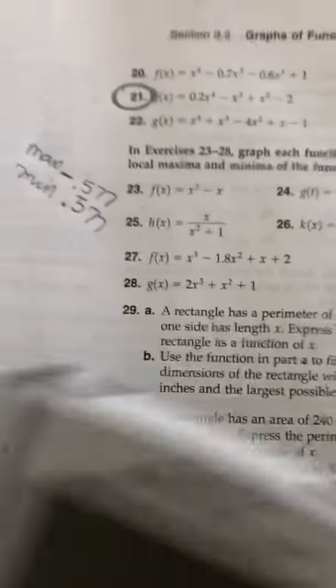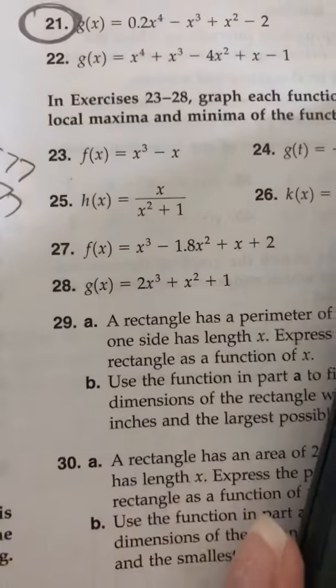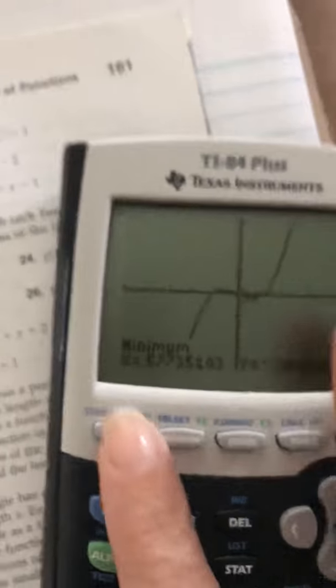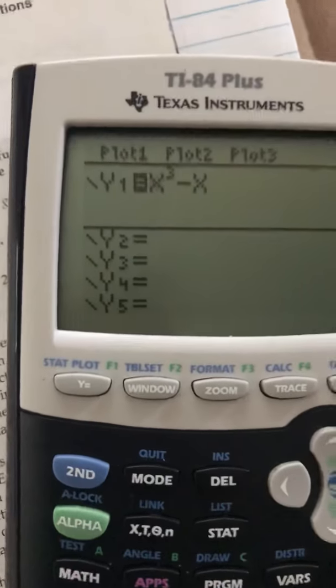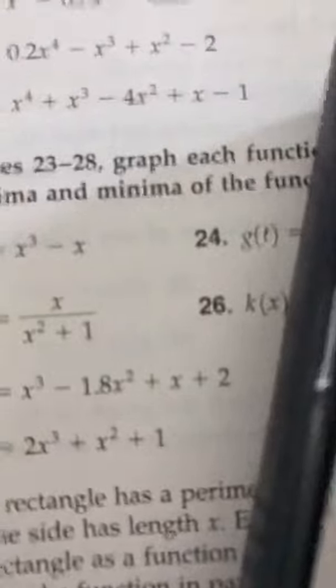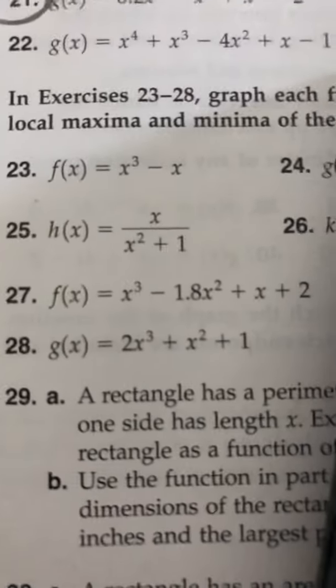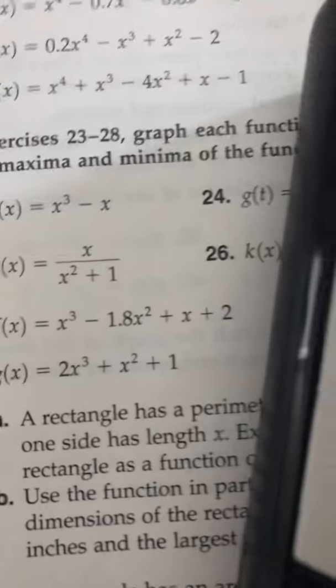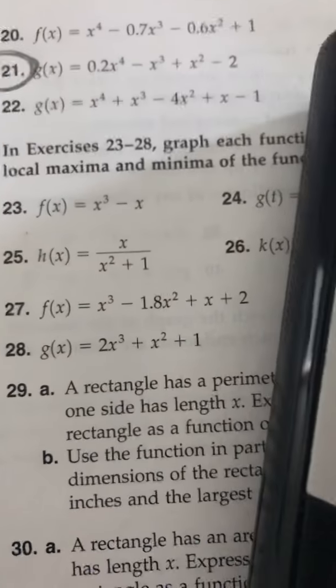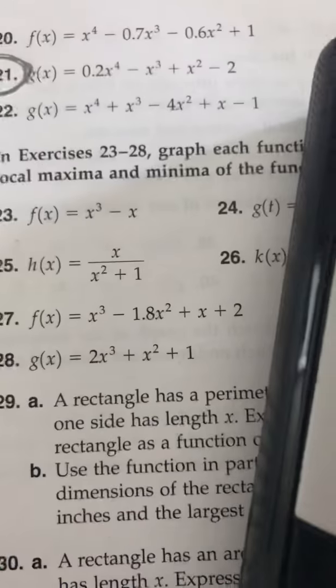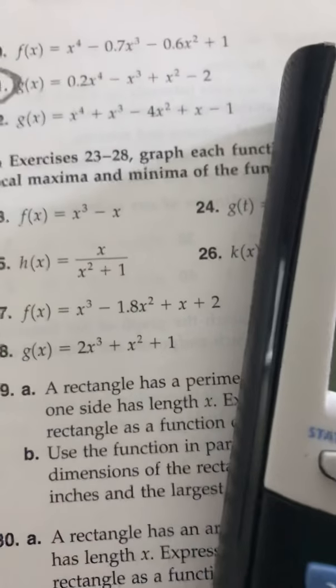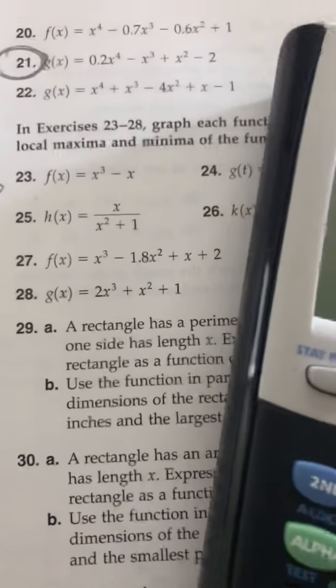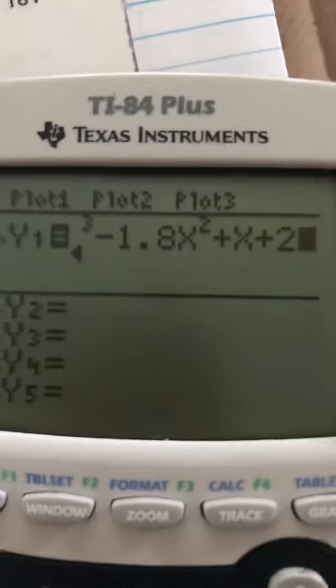Number 27 is the same thing. Find the maxes and the mins. So I'm going to put that equation in my calculator. Go back to y equals. Clear it out. And the equation is, for 27 x cubed, x cubed. I know I'm shaking.